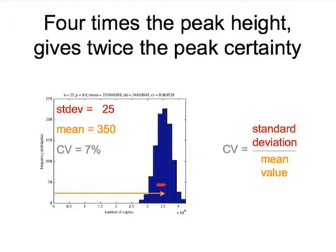On the other hand, if you quadruple the amount of DNA or the peak height, you get twice the peak certainty. Four times the quantity will give you twice the precision. Here we've quadrupled up to 350, and the standard deviation has doubled. By doubling and dividing by the quadrupling, we end up with a halving of the coefficient of variation. That's reflected visually — we're now taking up a quarter of the distance from baseline up to the maximum peak, whereas before, with a quarter of the DNA, we had taken up half of that space.